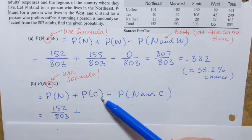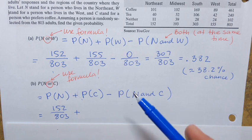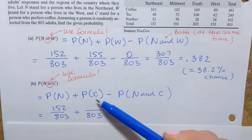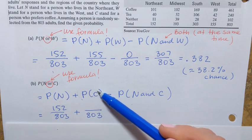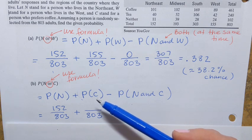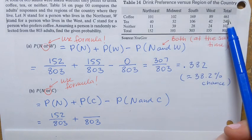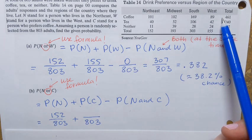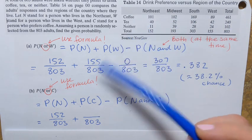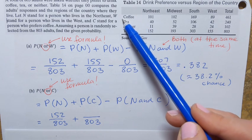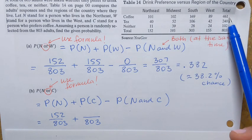Next, we find P(C) — the probability that the randomly selected person prefers coffee. The denominator is 803. The numerator is the total number of people who prefer coffee. From the table, the total for coffee is 461. When finding this probability, we focus only on coffee, not on any region. So P(C) = 461/803.